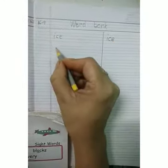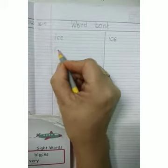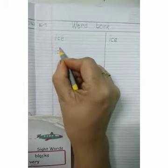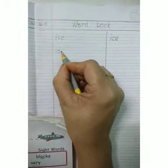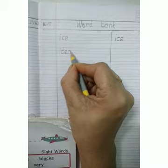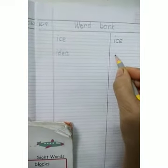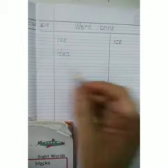Say and write. Then next word is I, D, E, A — idea. Write here also.